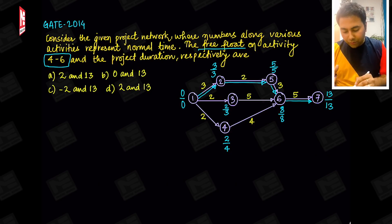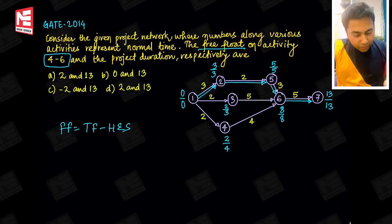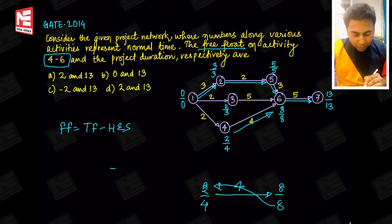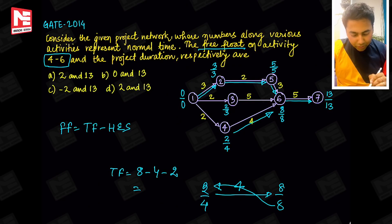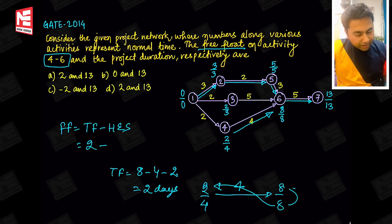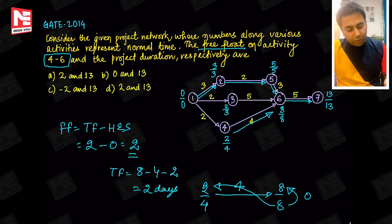Free float equals total float minus head event slack. For activity 4 to 6: duration is 2, early/late times are 4 and 2, and 4 and 8. Using the flying arrow: total float = 8 - 4 - 2 = 2 days total float. Head event slack = 8 - 8 = 0. So 2 - 0 = 2, therefore free float for activity 4-6 equals 2.